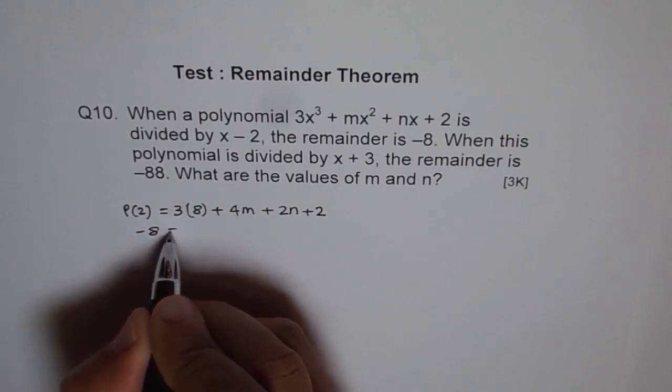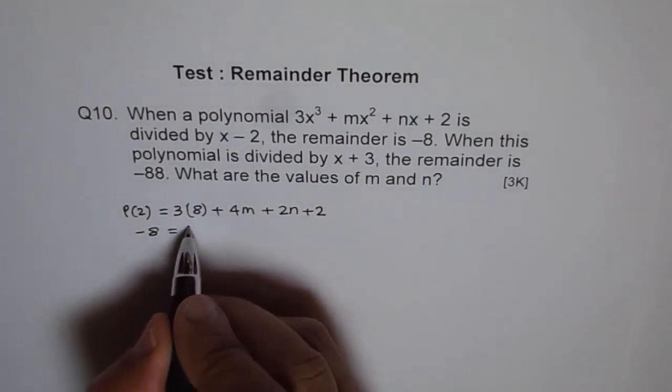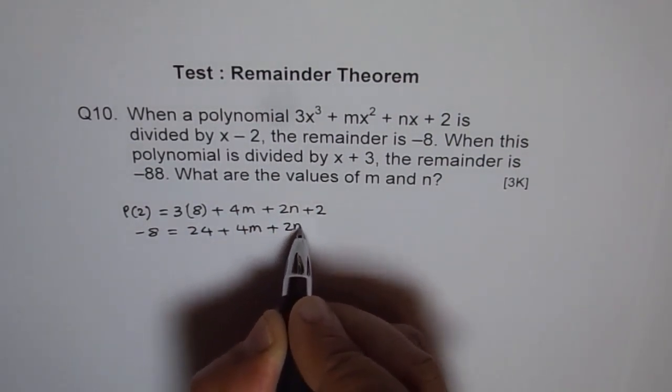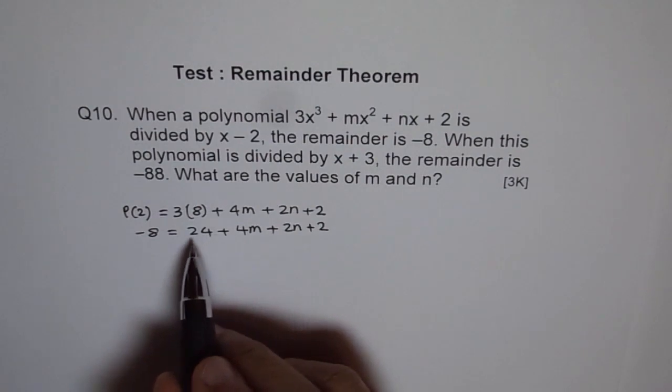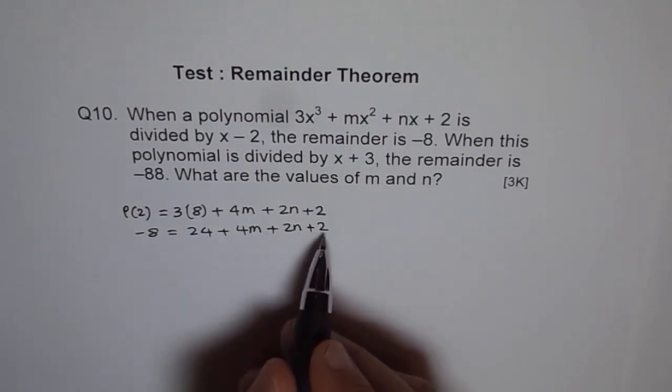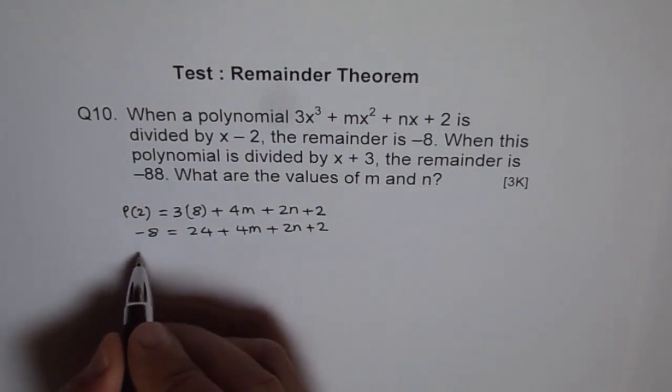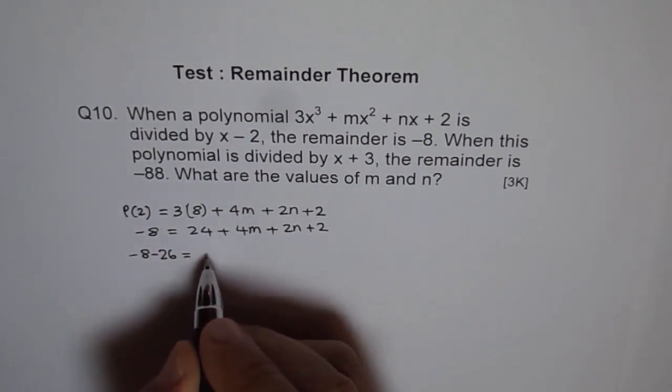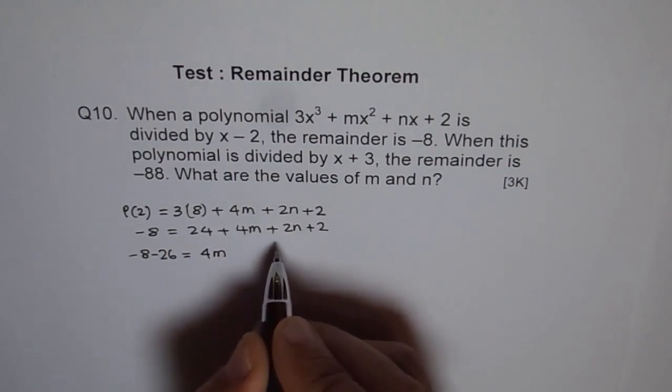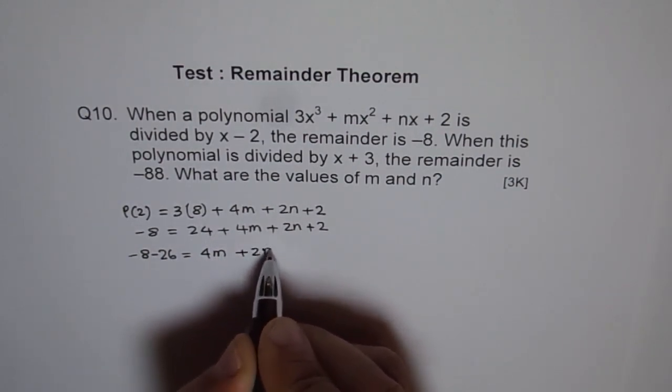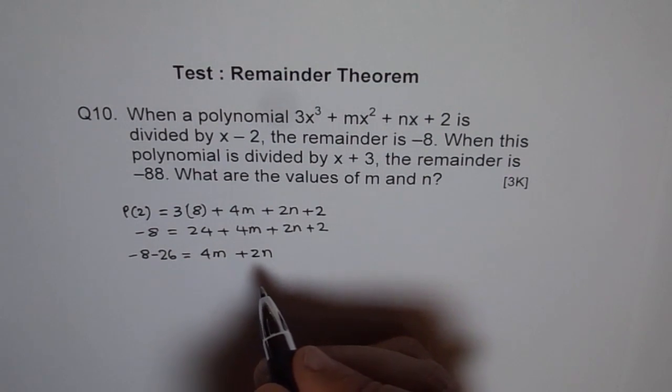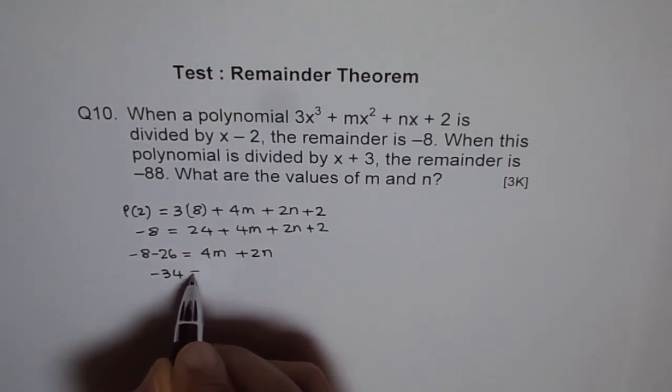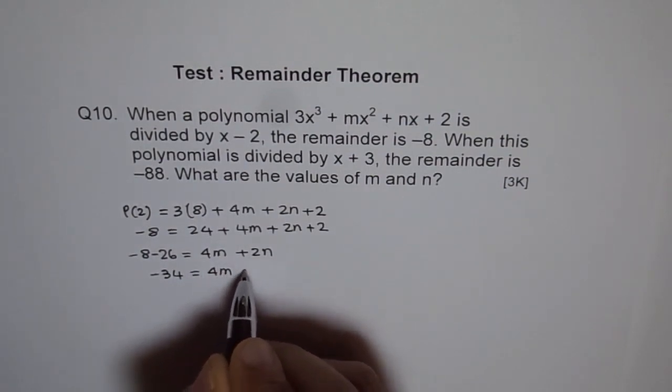So we say -8 equals 24 + 4m + 2n. Let's solve. So 24 + 2 is 26. So we have -8 - 26 equals 4m + 2n. So -34 equals 4m + 2n.